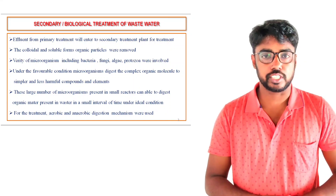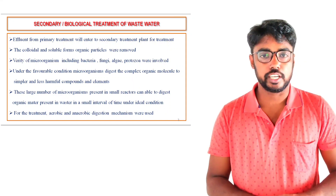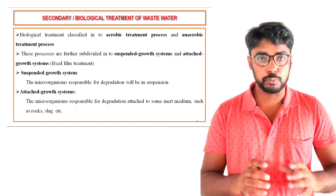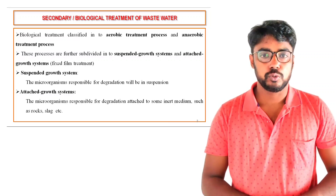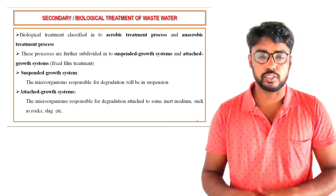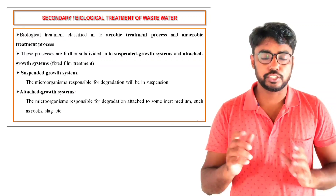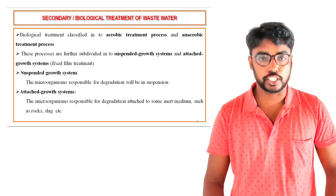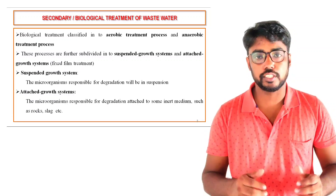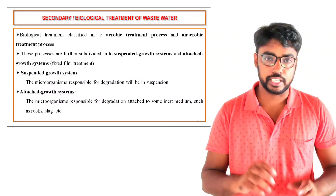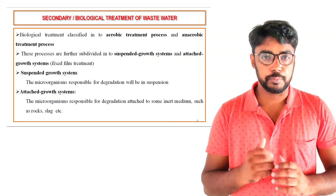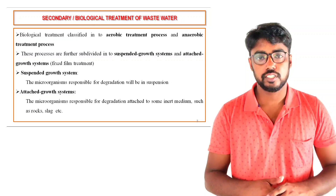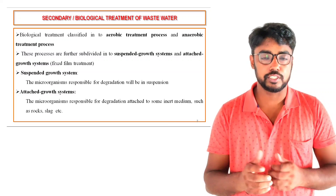For secondary treatment of wastewater, we use two methods: aerobic and anaerobic methods. Each is further classified into two types — attached growth system and suspended growth system. In a suspended growth system, the microorganisms involved in treatment remain in suspension. In an attached growth system, the microorganisms responsible for treatment are in attached form, meaning they form biofilms. We will discuss processes involving aerobic and anaerobic methods separately.